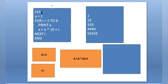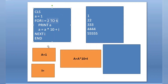Let me show you the dry run. CLS will clear the data from the output screen. Initially we are keeping the value of a as 1, so a = 1. Now FOR i = 2 TO 6 — this loop will run 5 times, with the value starting from 2 to 6. Initially the value of i will be 2, so PRINT a — 1 will be printed on the output screen.